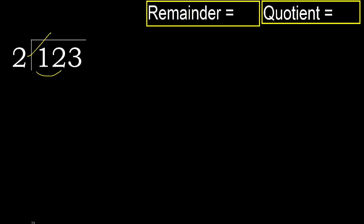2 multiplied by which number is nearest to 12 but not greater? 2 multiplied by 7 is 14 — 14 is greater. Multiply by 6: 12 is not greater. So 12 minus 12 equals 0.